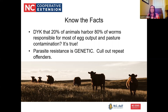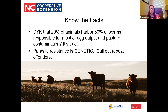Did you know that 20% of animals harbor 80% of the worms responsible for most of the egg output and pasture contamination? We call this the 20-80 rule. In any given herd, 20% of your animals are shedding out 80% of those worm eggs into your pasture. Fecal egg counting can help identify those high shedders. Parasite resistance is genetic, so cull out these repeat offenders — animals you're constantly having to deworm. You also don't want high shedders putting so many more eggs into the environment than anybody else. You want animals that, even if they have a little worm load, are not showing signs and are not shedding out a lot of eggs.